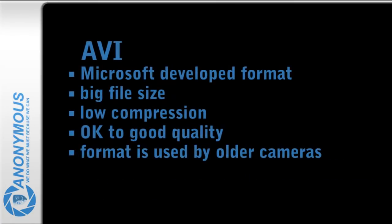AVI is a Microsoft-developed format and is large in its file size, which is a result of the low compression. The quality it delivers ranges from OK to good. It is a format sometimes used by older video cameras.